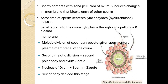After the zona pellucida dissolves, the sperm can penetrate inside the ovum. A meiotic division of the secondary oocyte occurs after the sperm enters the plasma membrane of the ovum. The second meiotic division produces the second polar body and the ovum's haploid nucleus. The sperm nucleus then fuses with the egg nucleus, and a zygote is formed.